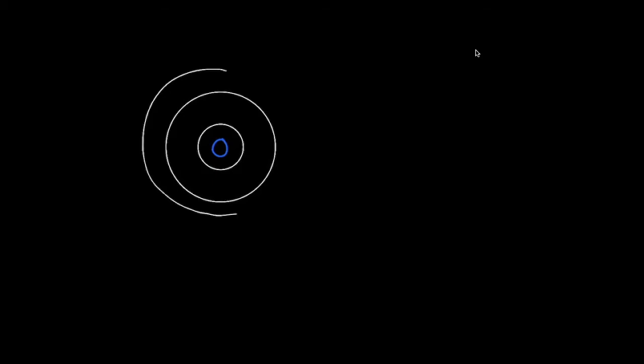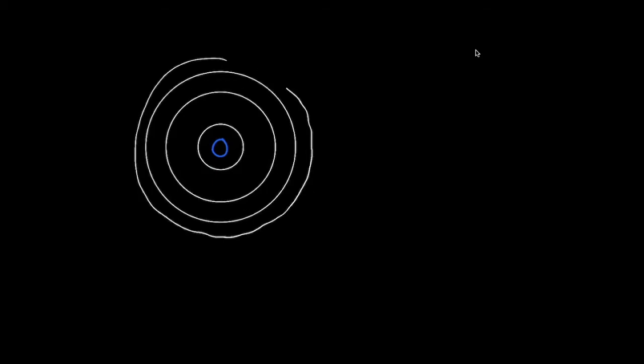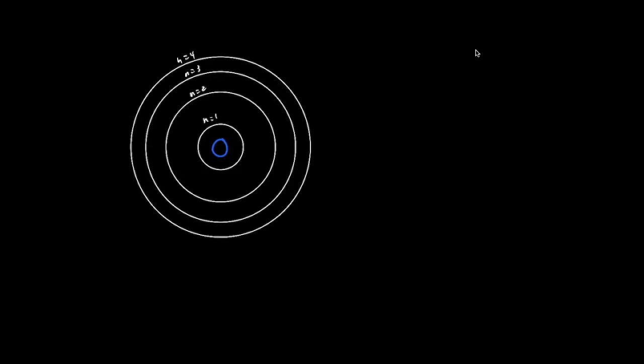Going to the ball model of the atom, we have a nucleus in the middle, followed by the n=1, n=2, n=3, n=4 energy levels, or electron shells, and all the way up to infinity.